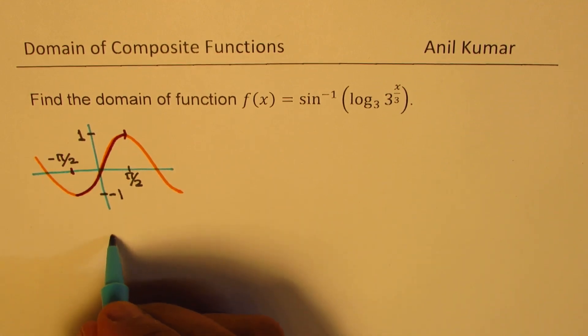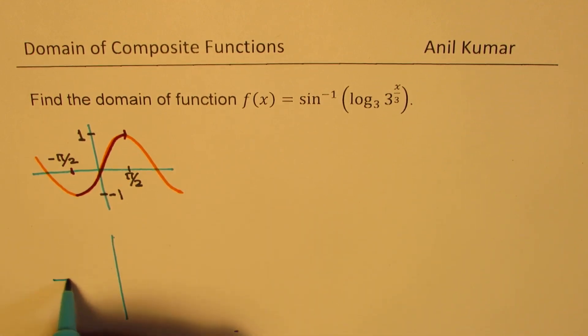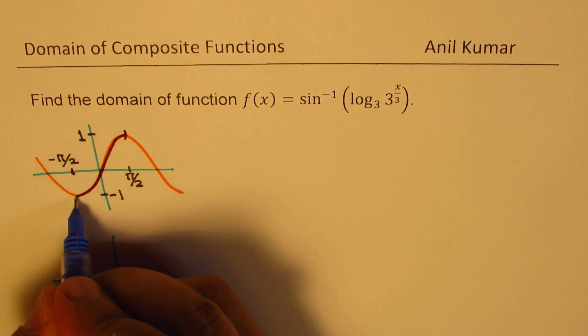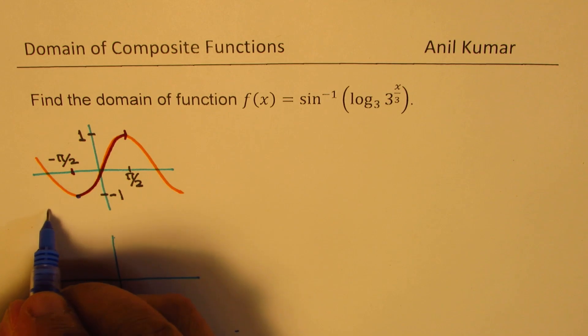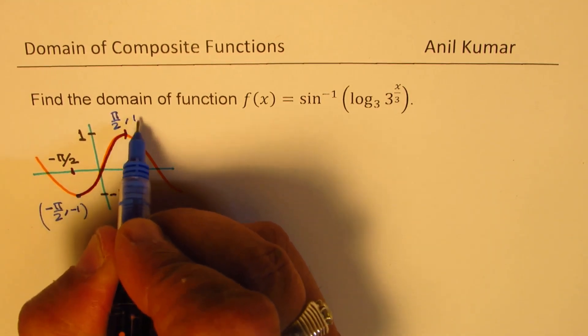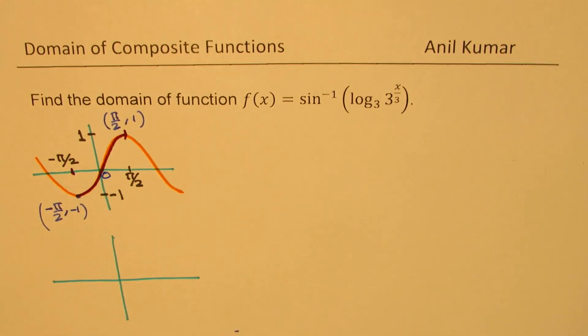So if I have to sketch the inverse of this particular function, how will it look like? This particular point is minus pi by 2 minus 1. Here, that one is pi by 2, 1 and then we have origin 0, 0.